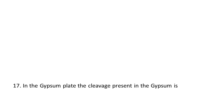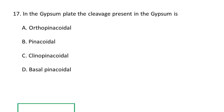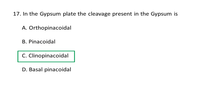Next question: In the gypsum plate, the cleavage present in gypsum is — A. orthopinacoidal, B. pinacoidal, C. clinopinacoidal, D. basalpinacoidal. The cleavage present in gypsum is clinopinacoidal, because gypsum has perfect cleavage in one direction and less distinct cleavage in two others. It has perfect cleavage parallel to the clinopinacoid {010}, and less perfect cleavage parallel to the orthopinacoid {100}. C is the correct option.